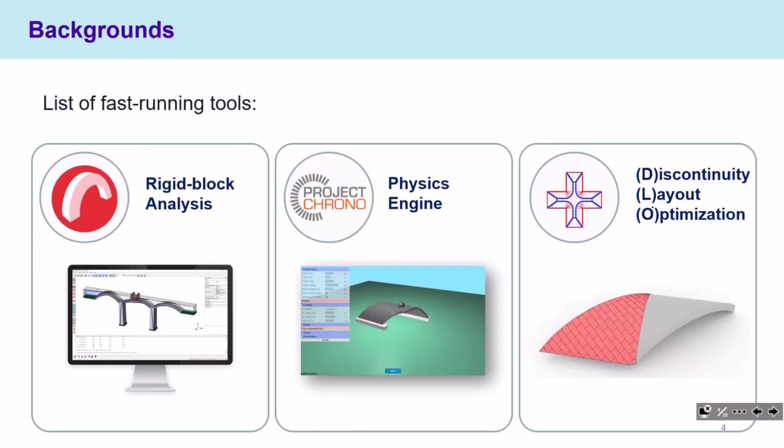For the fast running tools, we are looking at several tools with different focus. At the moment we have three types. The first type is the well-known rigid block analysis. The second type is the physics engine, which allows you to do simulation quite rapidly. And the third type is a novel discontinuity layout optimization method we developed.